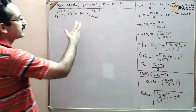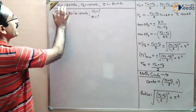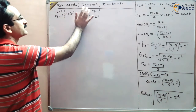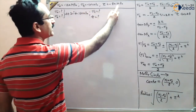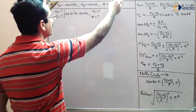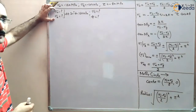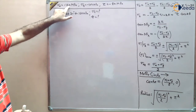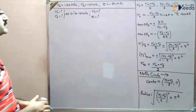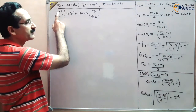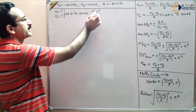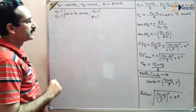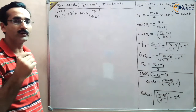We solved this numerical using the analytical method where sigma_x = 160 MPa compressive, sigma_y = 100 MPa compressive, and shear stress tau was taken as minus 80 MPa. Our aim is to find the normal stress and shear stress at an angle of 30 degrees to the 160 MPa plane, and also the resultant stress since these are perpendicular to each other.